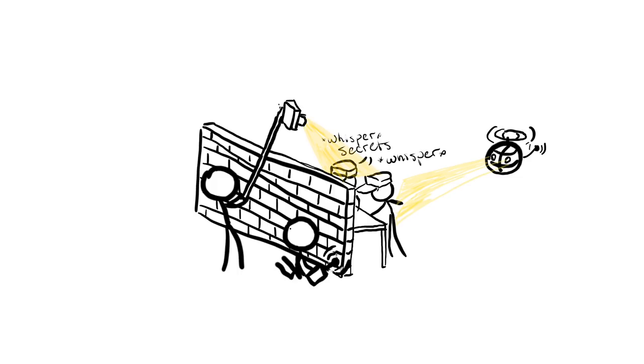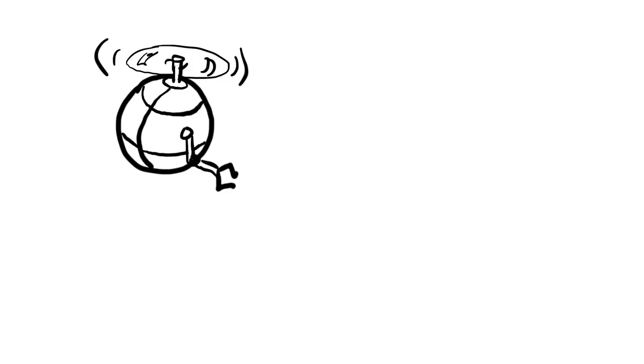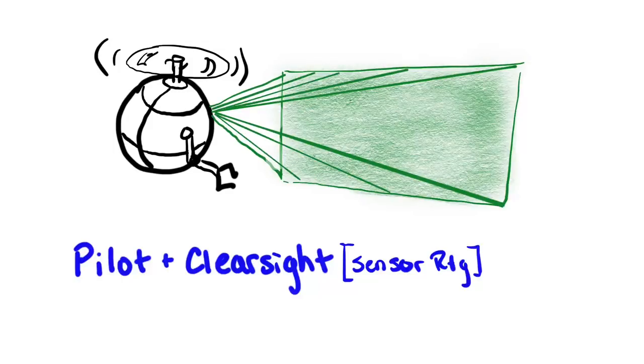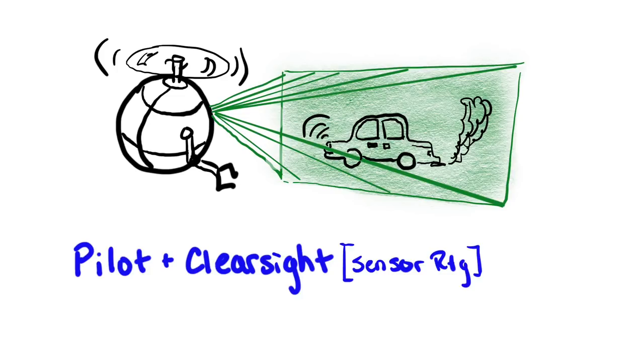Drones or automated turrets will complete sensor targeting by performing a test of Pilot plus Clear Sight, limited by the sensor's rating. Vehicles making this test are looking for emissions, sound, and composition of other vehicles, so they may have modifiers based on their target. See the signature table on page 184 of the Core Rulebook. If the target is attempting to sneak, the test will be opposed by the target's stealth pool.